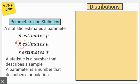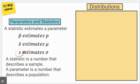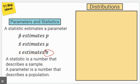X-bar is our sample mean, and it estimates mu, which is our population mean. So the sample mean x-bar estimates mu, the population mean. And then finally, s, which is our sample standard deviation, estimates the population standard deviation, which is sigma. So s estimates sigma.